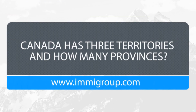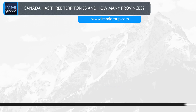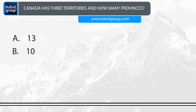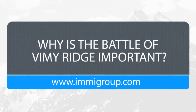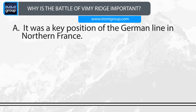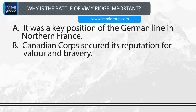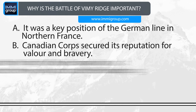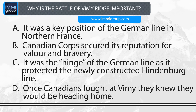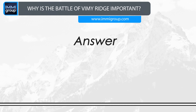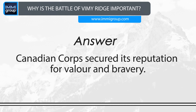Canada has three territories. How many provinces? A. Thirteen. B. Ten. C. Three. D. Five. Answer: Ten. Why is the Battle of Vimy Ridge important? A. It was a key position of the German line in northern France. B. Canadian Corps secured its reputation for valour and bravery. C. It was the hinge of the German line as it protected the newly constructed Hindenburg line. D. Once Canadians fought at Vimy, they knew they would be heading home. Answer: Canadian Corps secured its reputation for valour and bravery.